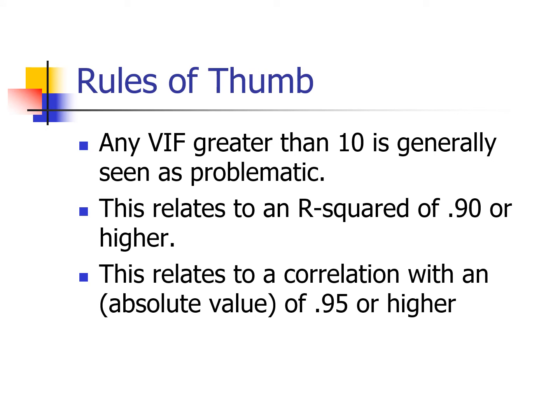The rule of thumb is: when the VIF is greater than 10, that's a problem we should do something about. Working back through the formula, a VIF of 10 corresponds to an R-squared or correlation-squared of 0.9 or higher, which relates to a correlation with absolute value of about 0.95 or higher.